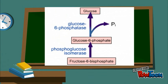Fructose-6-phosphate is then converted to glucose-6-phosphate by phosphoglucose isomerase. Then all that remains is to remove one phosphate group to generate glucose.